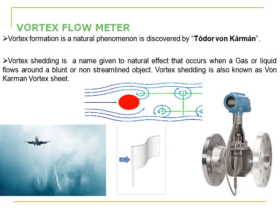So what is vortex shedding? Whenever a bluff body or non-streamlined object is placed in a fluid flow — that may be gas or liquid — a series of vortices are formed on the downstream side of this bluff body. This is known as vortex shedding, also called the Von Kármán vortex street, and it is a natural phenomenon you can see everywhere.